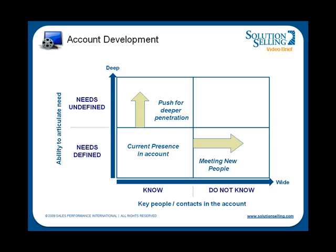Or by meeting new people in the account that may have similar needs they can also help to solve. To develop business in an account, top sellers perform a white space analysis — a simple exercise that can increase the number and value of opportunities in your pipeline by two to seven times, and in some cases by even more. Let's see how to find the white space in accounts.